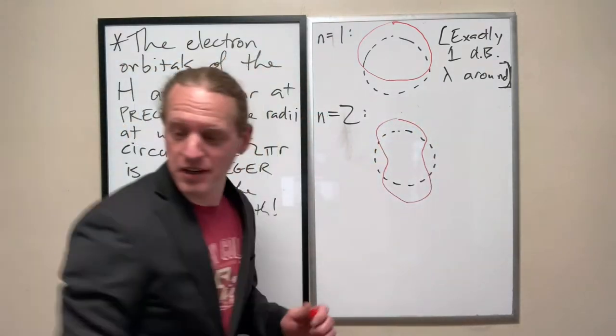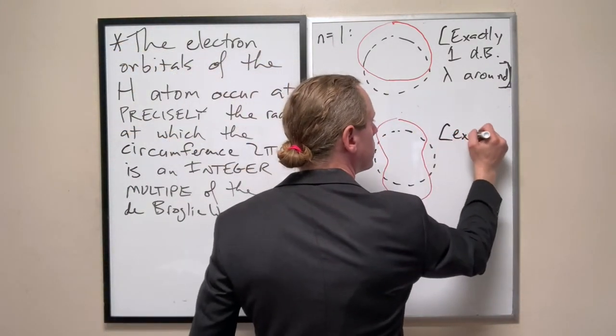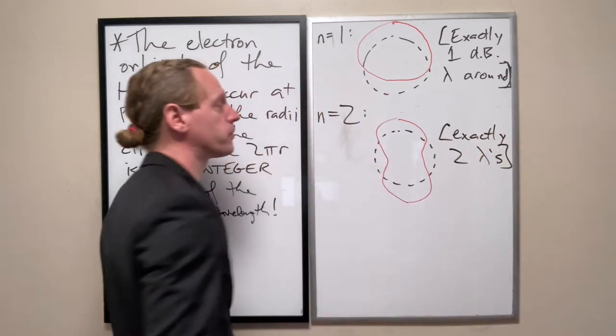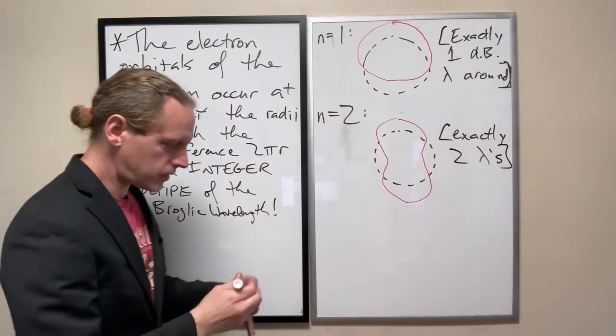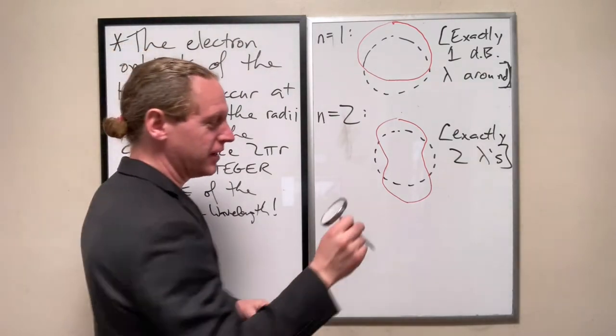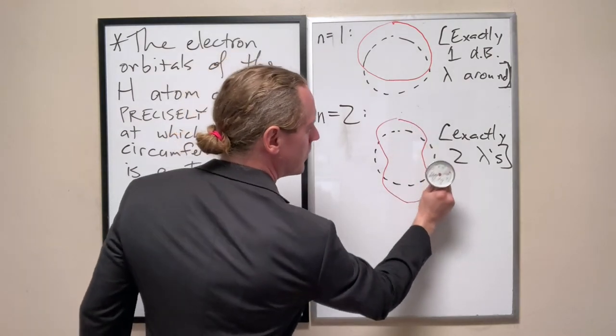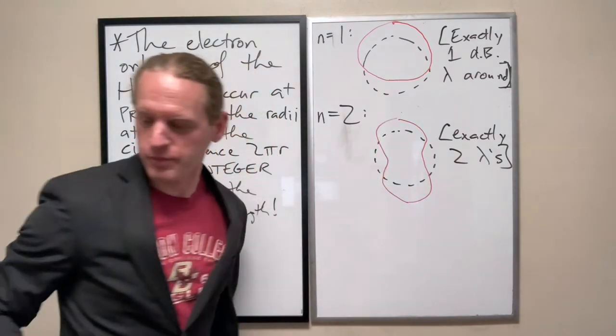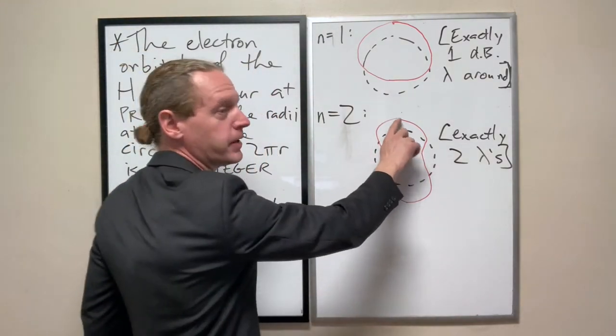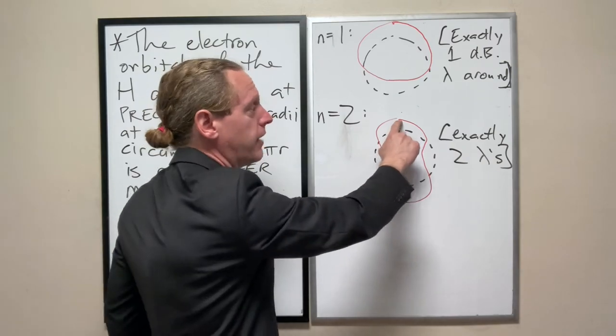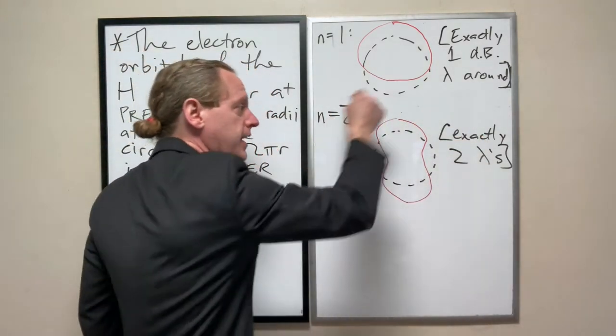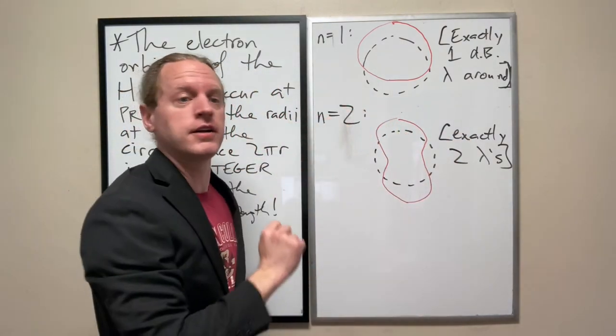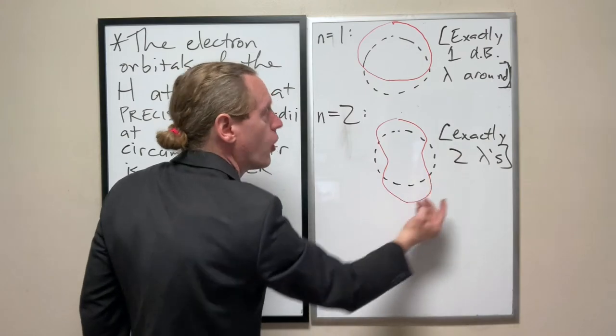In this case we see there are two de Broglie wavelengths. We can view it as my meat thermometer—it goes around once, and then again it goes around twice. Every time it goes back up here, it perfectly aligns back with that first time. Otherwise, we're guaranteed that after billions of times around, if it didn't perfectly match up, we're guaranteed there would be destructive interference over long timescales.